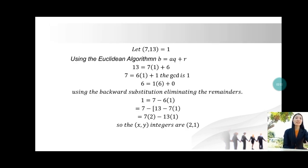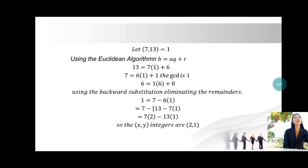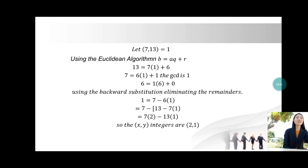Example: gcd(7, 13) = 1. Using the Euclidean algorithm, b = aq + r: 13 = 7 × 1 + 6, quotient is 1 and remainder is 6. Next, 7 = 6 × 1 + 1, remainder is 1 so the gcd is 1.